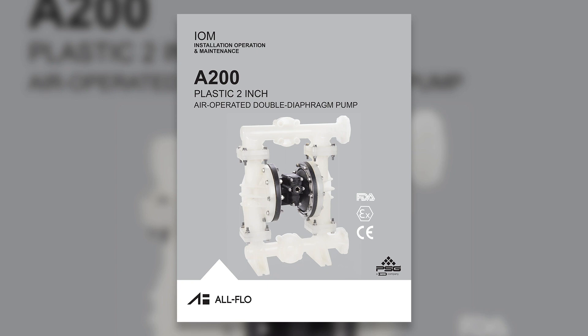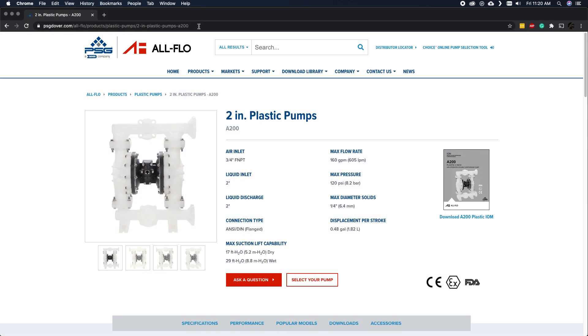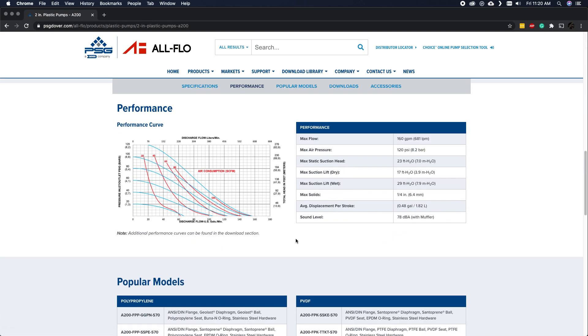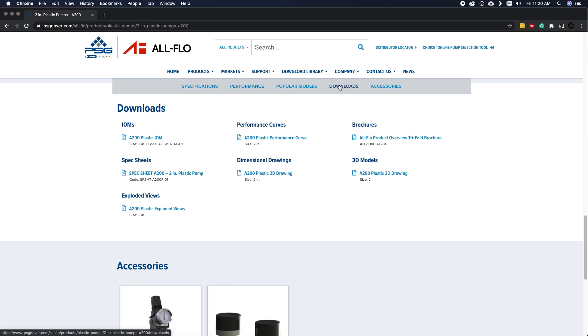Every AllFlow air operated double diaphragm pump or AODD pump has a performance curve. Performance curves for each pump can be found within the pump's manual as well as on the pump's product page on our AllFlow website.